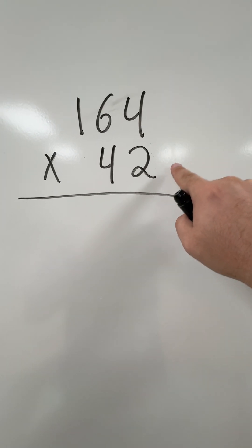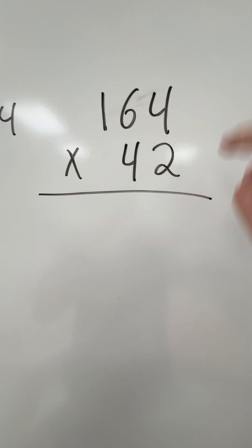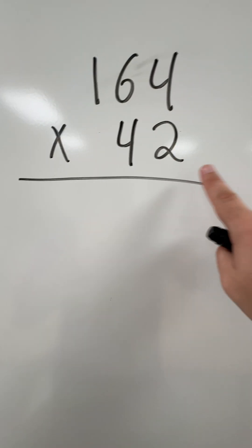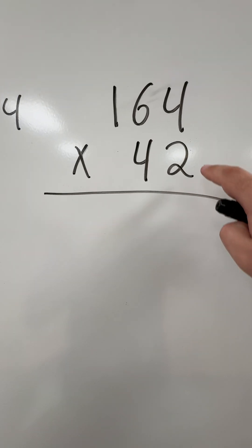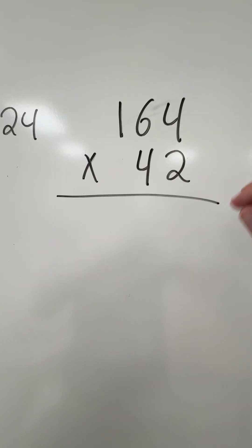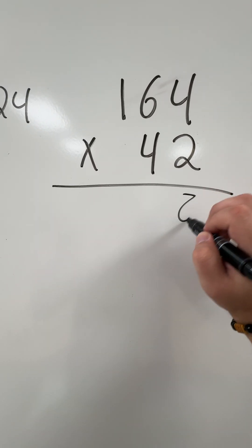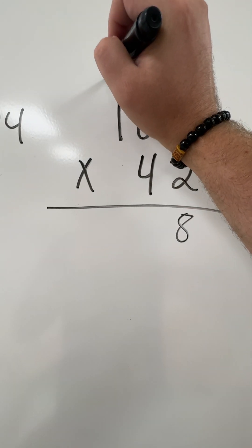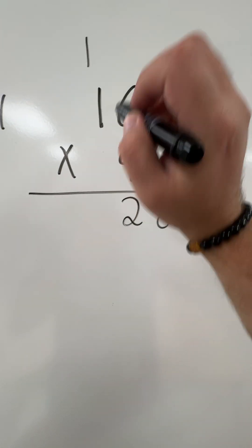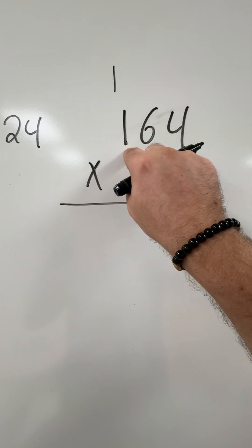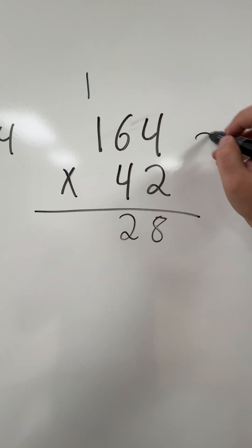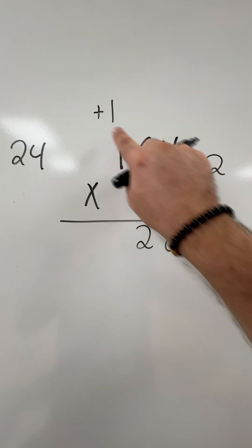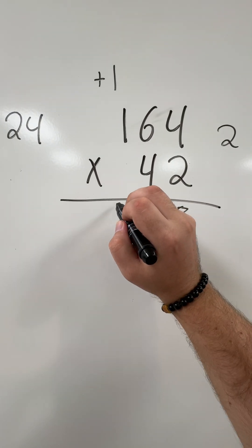So I'm going to multiply the two times all of my top numbers, then the four by all of my top numbers. So ignore the four for right now, only focus on the two. So two times four is going to be eight. Two times six is going to be 12. I carry the one, I drop the two. Two times one is going to be two, but then I have to add the one on top. So two plus one is going to be three.